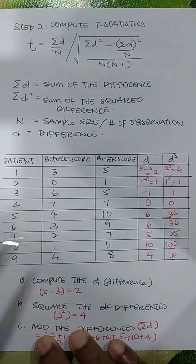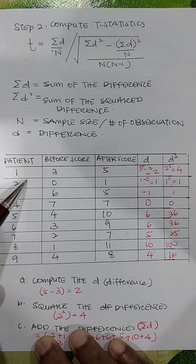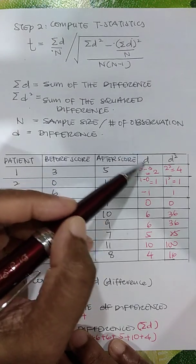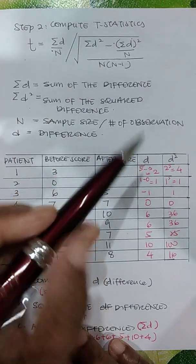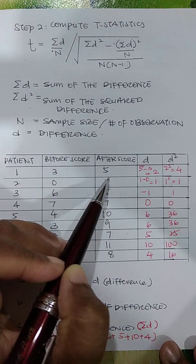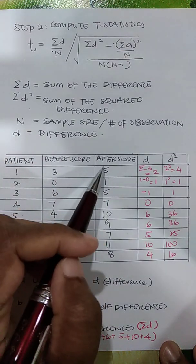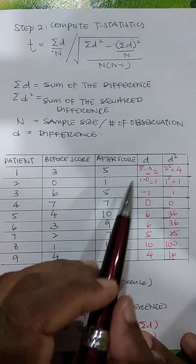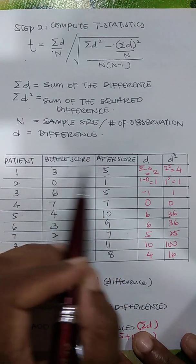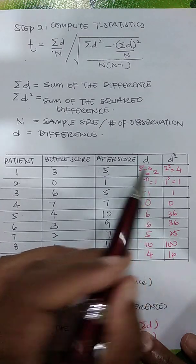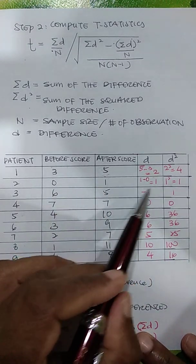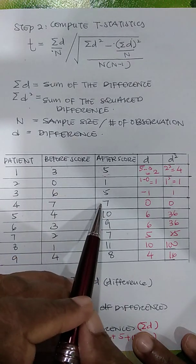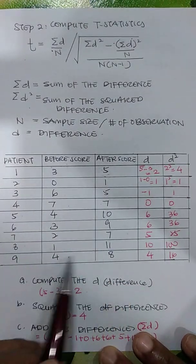We have 9 patients with scores before and after taking the medication. The difference D is computed as the after score minus the before score for each patient. For example: 5 minus 3, then 1 minus 0, then 5 minus 6, then 7 minus 7, and so on — these are all the differences between the two scores.